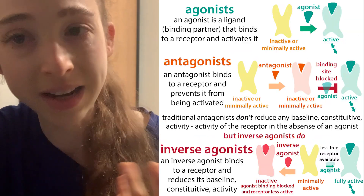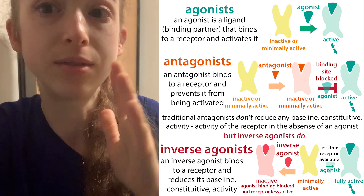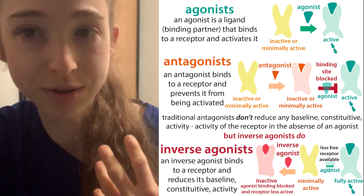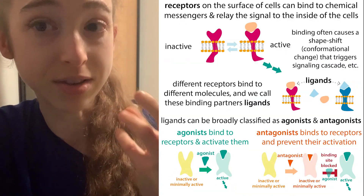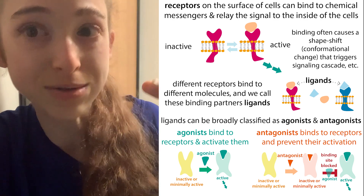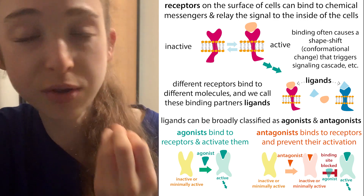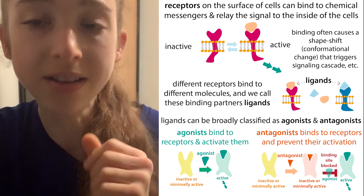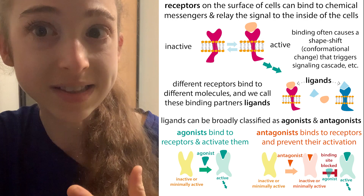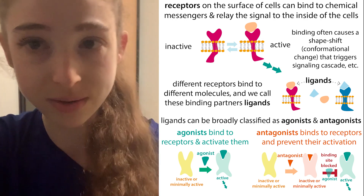There are also more complicated things like inverse agonists, which actually prevent the normal, constitutional activity of the receptor. Receptors are typically on the surface of cells and can bind to a ligand from the outside — an extracellular ligand. The ligand binds to the receptor, causes the receptor to change shape — what we call a conformational change — and relays this signal into the inside of the cell, which can then cause signaling cascades and various other things.